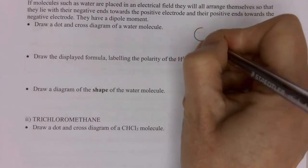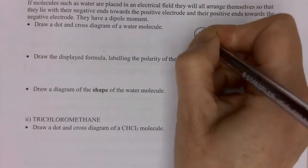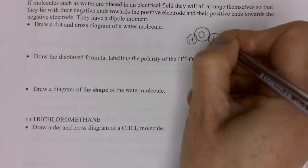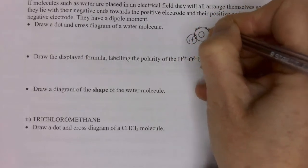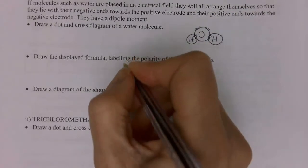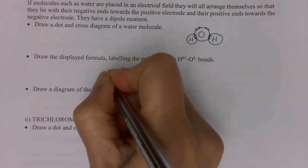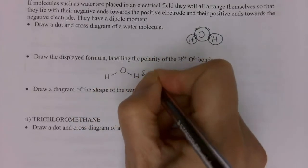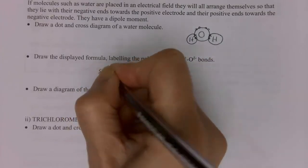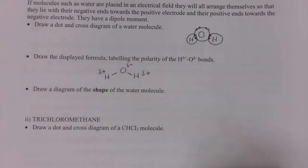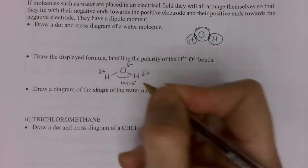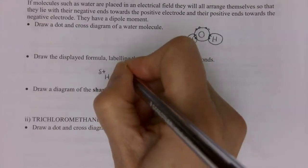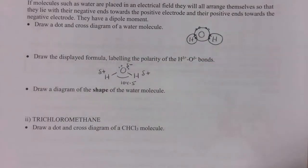If we consider the water molecule, you have an oxygen which is covalently bonded to two hydrogens with a single bond, and oxygen has two lone pairs of electrons. Oxygen is quite electronegative so the hydrogens are delta positive and the oxygen end is delta negative. The bond angle is 104.5°, giving an unsymmetrical electron cloud. The bond polarities do not cancel out and therefore this is a very important polar molecule.